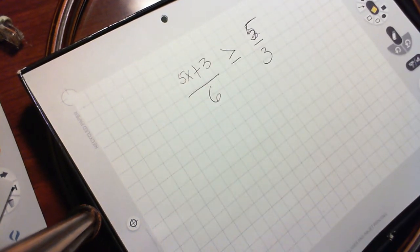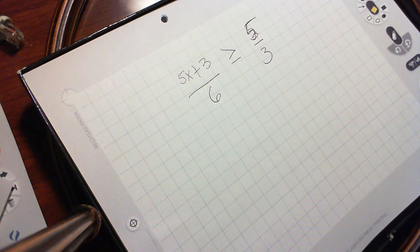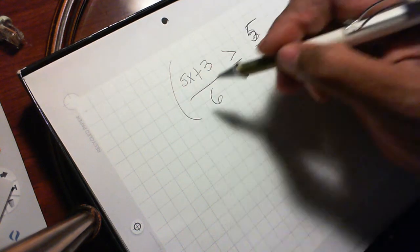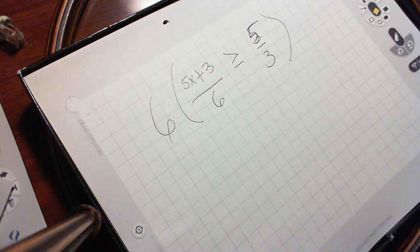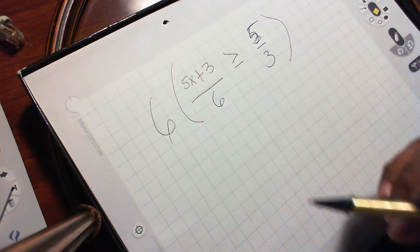So again, we need to get rid of the denominators, and here the least common denominator is 6. So we're going to multiply through by 6 to get rid of the fraction. You're allowed to do that because you're multiplying both sides of an inequality by a positive number, and that doesn't change it.